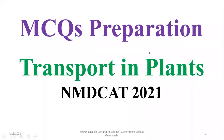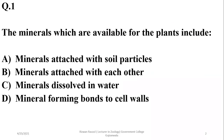Bismillah ar-Rahman ar-Rahim. In this short video we are going to have a discussion about transport in plants based on MCQs. The minerals which are available for plants include those which are freely dissolved in water and present in ionic form — they are available for plant absorption.